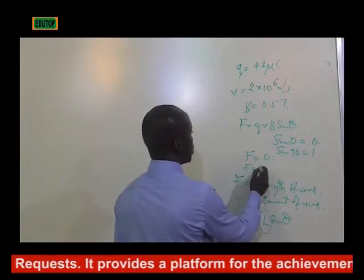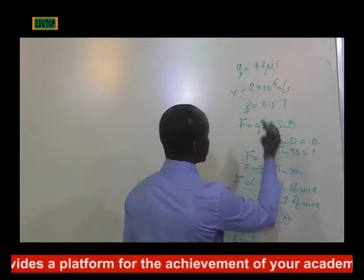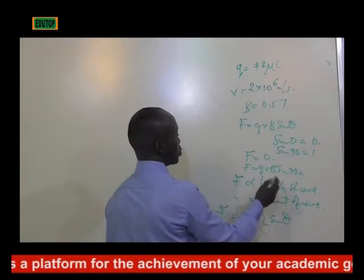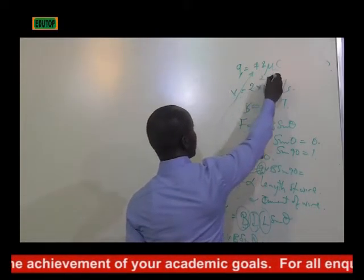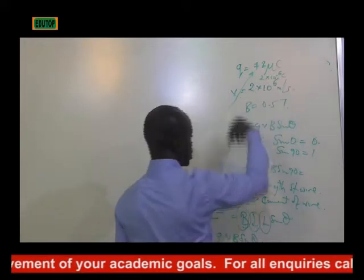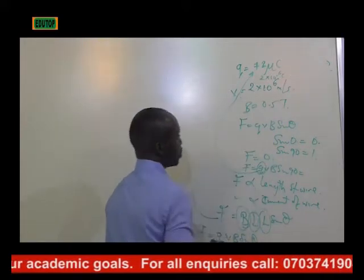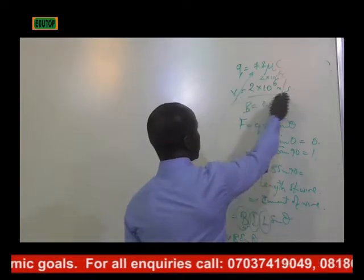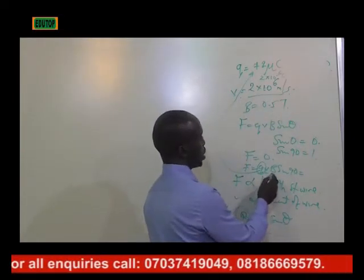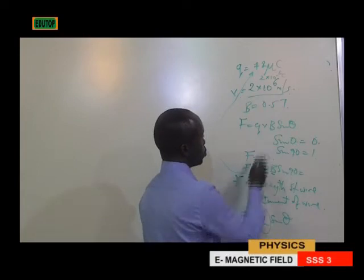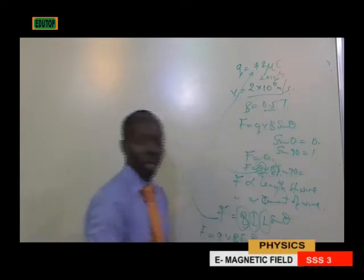So from there, your F equals QVB sin 90. You just insert those values. Your Q, which is 2 times 10 to the power of minus 6. Your velocity, which is 2 times 10 to the power of 6. You put it here. Then your Tesla, 0.5 Tesla — you put it in here and you compute.